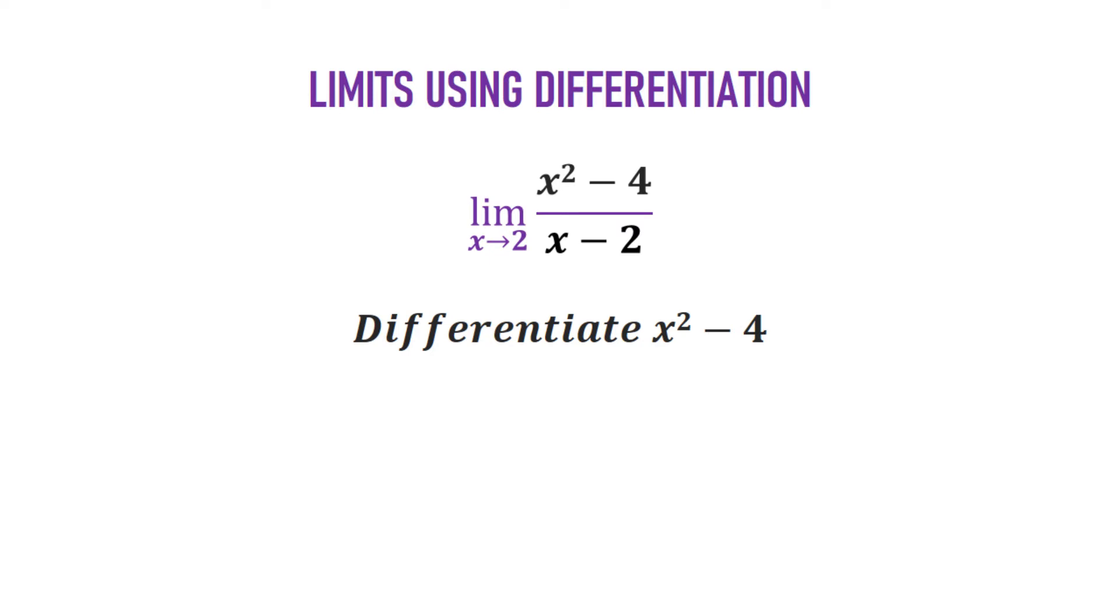So, x squared minus 4 equals 2x. Now, how do we get to this? The power of x comes down to multiply and subtract 1 from the power. And at the end of the day, you have 2x. And since 4 is a constant, it does not have any x, then it becomes 0. The constant will always become 0.